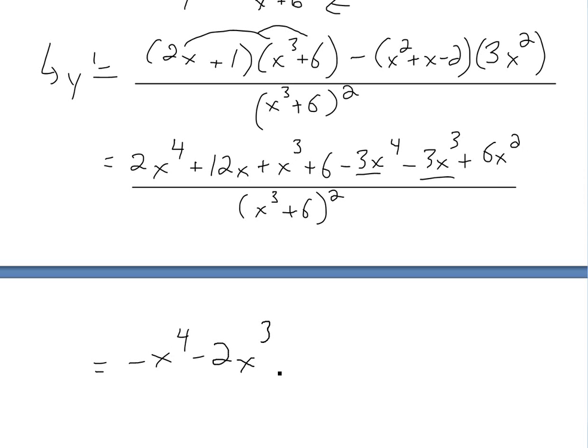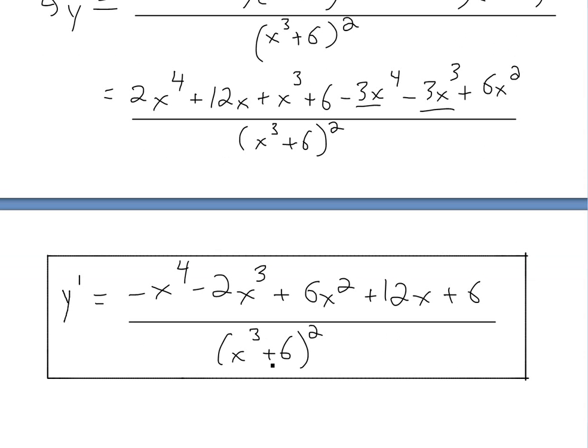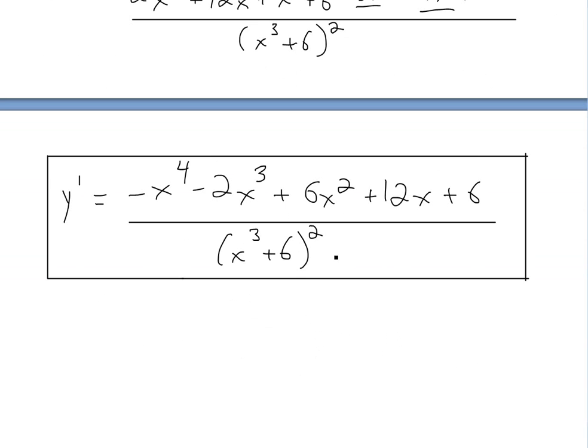plus 6x². And now we have this plus 12x, and then we just plus this 6, there's nothing else the same power as it. And then basically all divided by (x³ + 6)². So this is the final answer: y' = (-x⁴ - 2x³ + 6x² + 12x + 6) / (x³ + 6)².